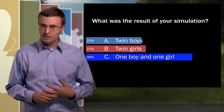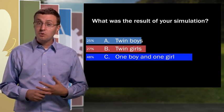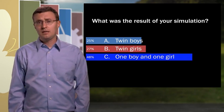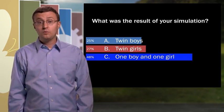At this point, it's pretty clear that the three possible outcomes aren't all equally likely. In fact, the most likely outcome is that you'll have one boy and one girl.